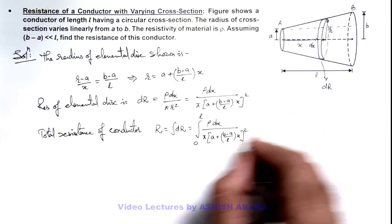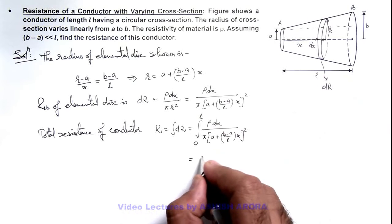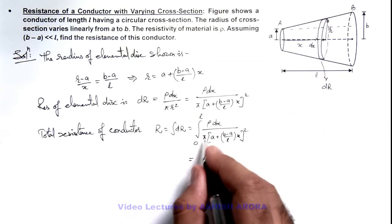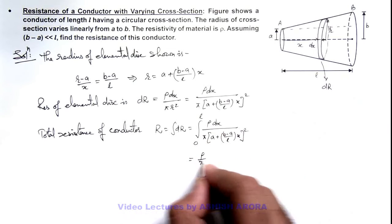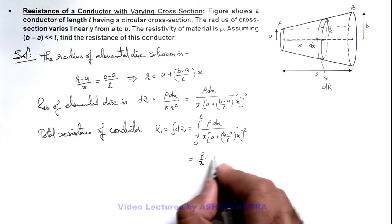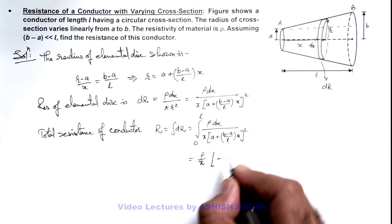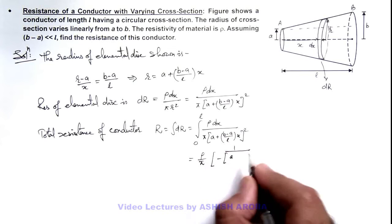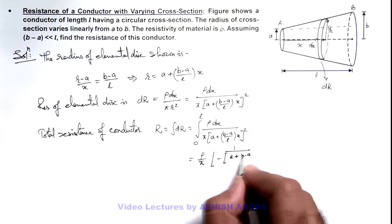So if we integrate it, you can see the result we are getting is: ρ/π can be taken as a constant, and 1 divided by [a + (b-a)x/l]² when integrated will be minus 1 divided by [a + (b-a)x/l].